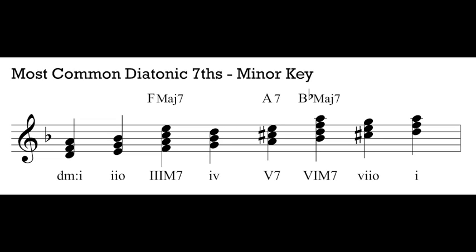In our minor key we have two minor triads, one and four. When we add a seventh to them, both become minor seventh chords: i7 and iv7 — D minor seven and G minor seven on the lead sheet. These are the seventh chords most commonly built off of scale degrees one and four in the minor key. Notice that the i7 chord does not use the C-sharp from our harmonic minor scale; it uses C-natural from our natural minor scale. If we had that C-sharp we would have a minor triad with a major seventh above it, which is not a chord we see often in tonal music.